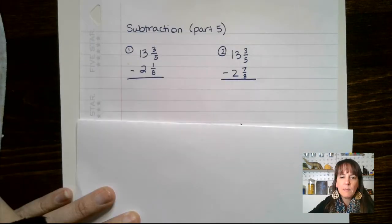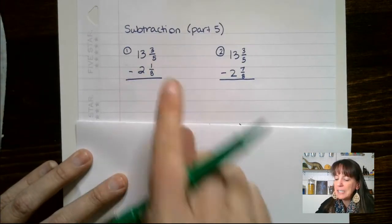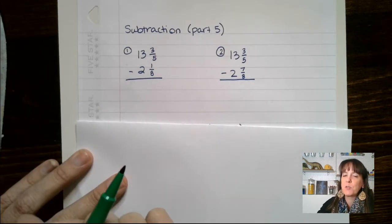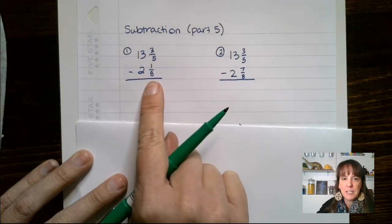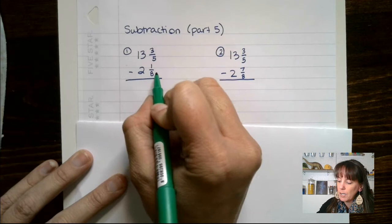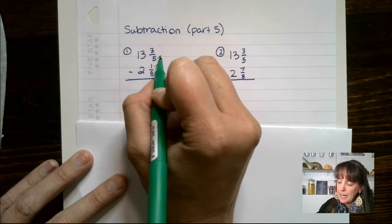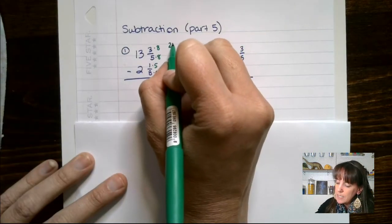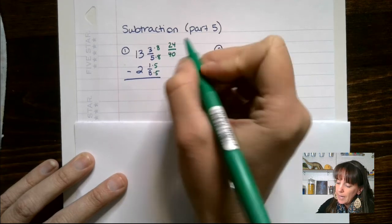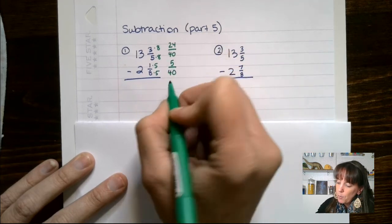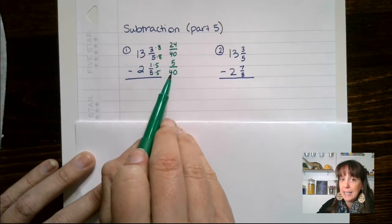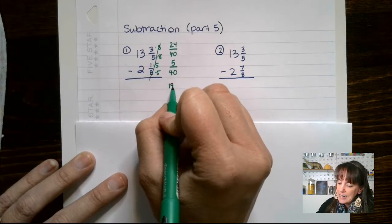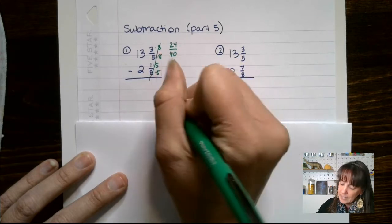Let's talk about subtraction. I'll leave these in mixed numbers, though you can always turn them into improper fractions and subtract that way. Dealing with fraction bits first: denominators are 8 and 5, so common denominator is 40. Multiply accordingly — whatever I do on the bottom, I do to the top. I end up with 24 over 40 and 5 over 40. We are subtracting, so 24 minus 5 gives me 19 over 40. And 13 minus 2 gives me 11. So the answer is 11 and 19 fortieths.